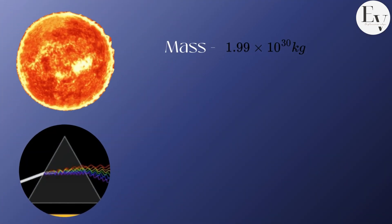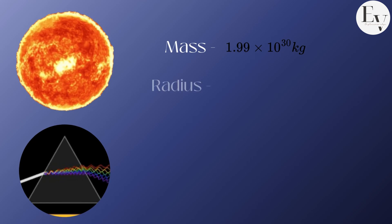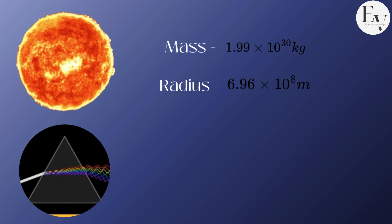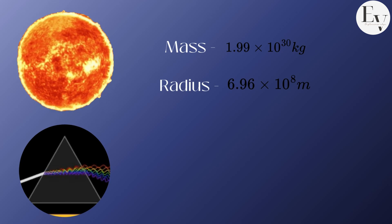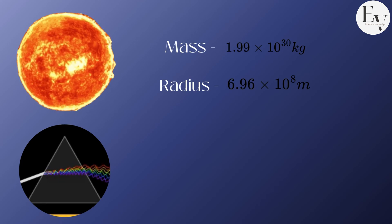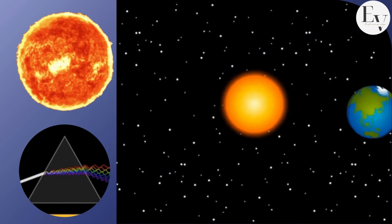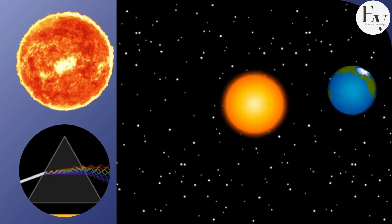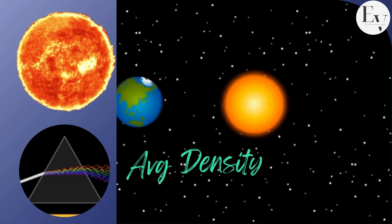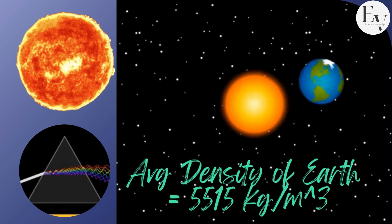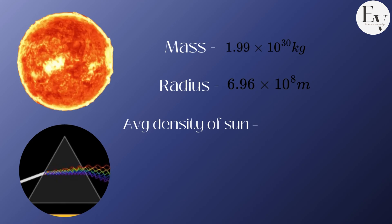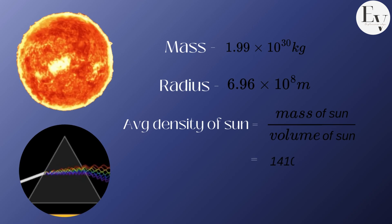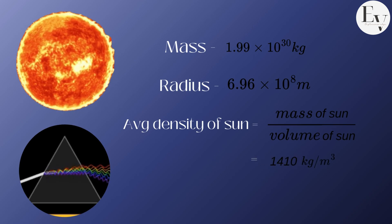The sun's mass equals 1.99 × 10^30 kg and its radius equals 6.96 × 10^8 meters — much larger than those of any planet. Compared to other stars, our sun is not exceptionally massive. The average density of the sun equals mass of the sun over the volume of the sun, which equals 1410 kg per meter cubed.